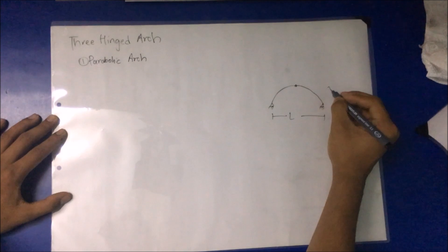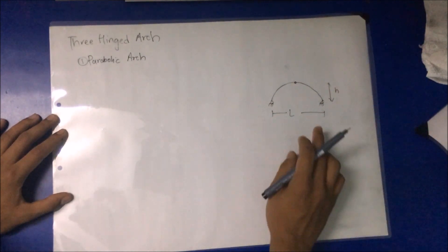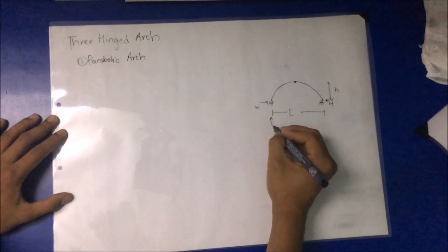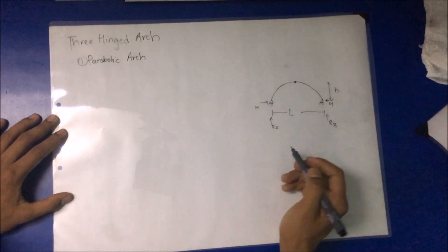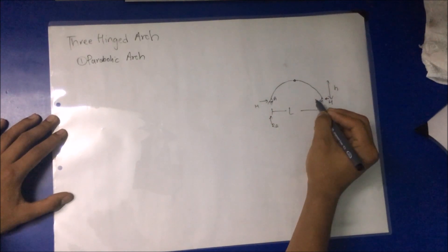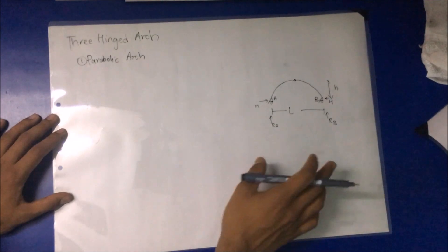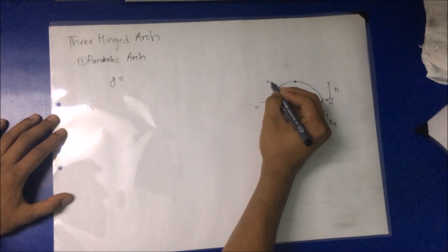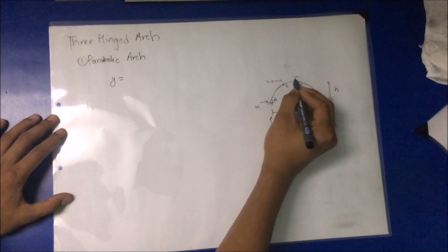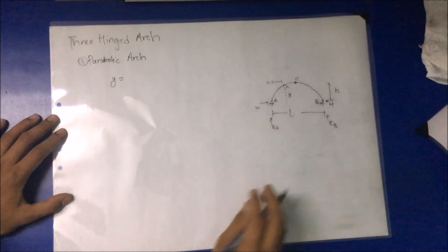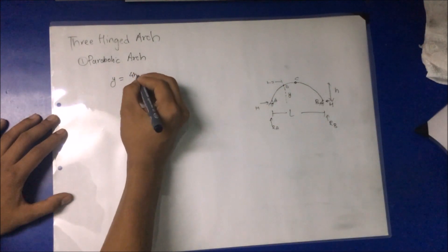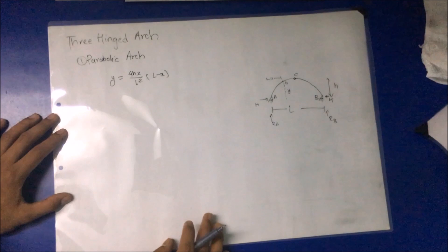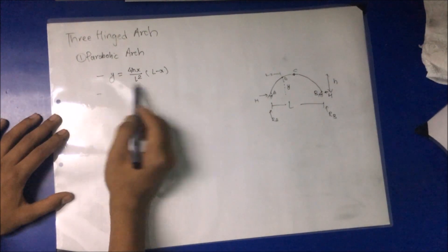A three-hinged arch of span L and a central rise of H, with supports at the same level. H is the horizontal thrust, and RA and RB are the vertical support reactions at supports A and B respectively. At any section at a distance X, Y is equal to 4H·X / L² · (L − X). This is the formula for Y.